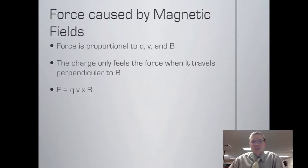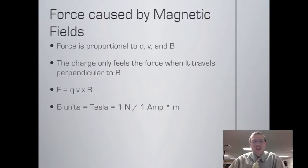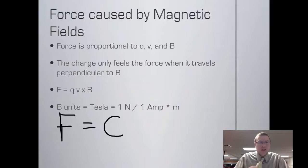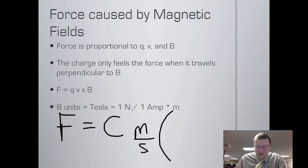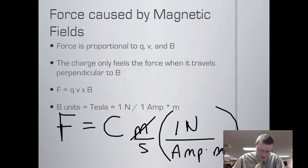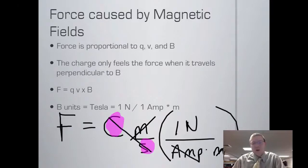We do have units for all this. The magnetic field strength is measured in Teslas. One Tesla equals one newton per amp times meter. To verify units: charge is in Coulombs, velocity is in meters per second, and multiplying by Tesla gives newtons per amp times meter. The meters cancel easily, and since an amp is charge per second, we're left with charge per second on top and an amp on the bottom — which cancel — leaving us with a newton in the end.